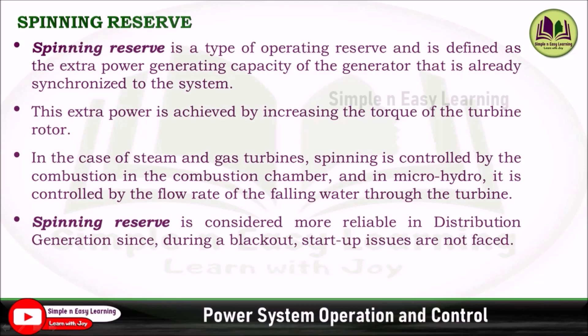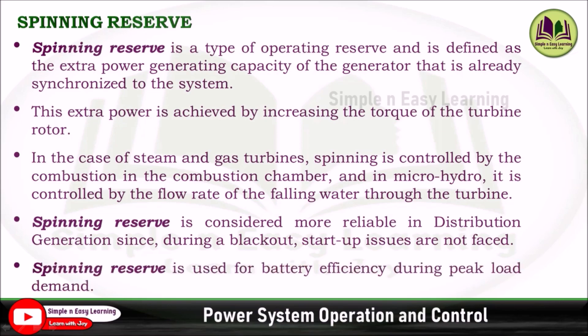Spinning reserve is considered more reliable in distributed generation since during a blackout, startup issues are not faced, and spinning reserve is used for battery efficiency during peak load demand.